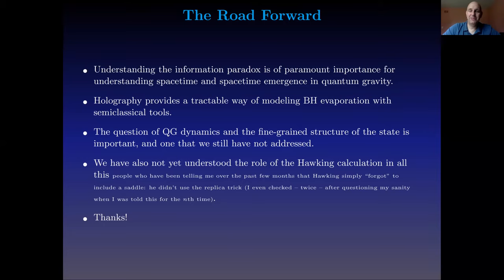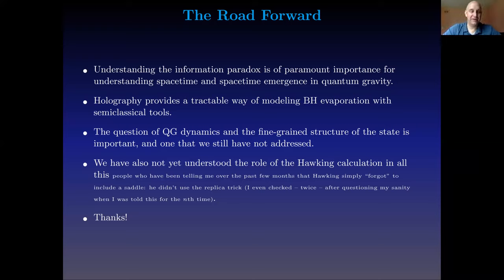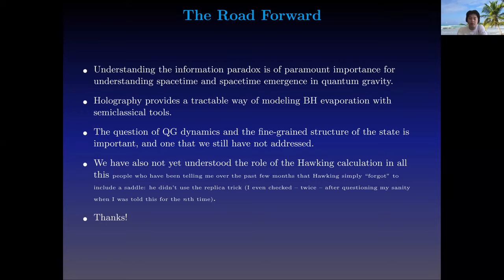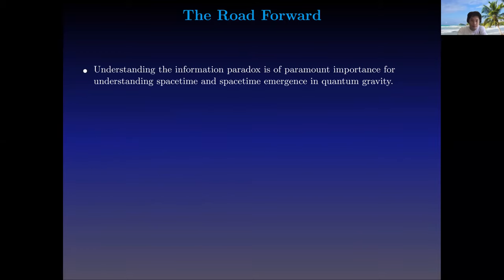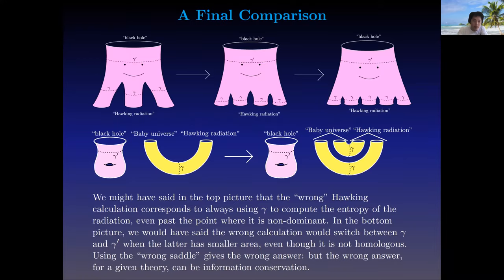Also, we haven't yet understood the role of Hawking's original calculation in all of this. People have been telling me for the past few months that Hawking forgot to include a saddle when he did the replica trick — said with such aplomb that I went back and checked twice whether Hawking actually used the replica trick. Of course, Hawking didn't use the replica trick. Saying he forgot to include a saddle doesn't tell us exactly what he did wrong in terms of these JT gravity models. This is something quite important to understand, and is work in progress with Daniel and Chris.